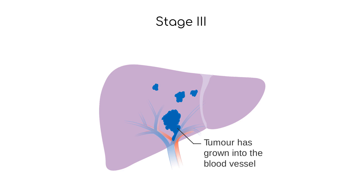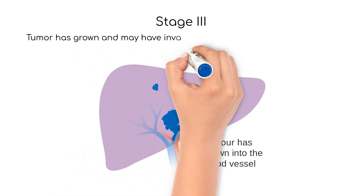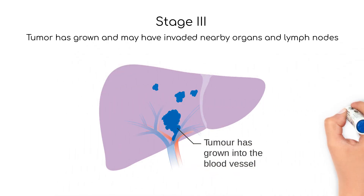Stage 3 is a more advanced stage of cancer when the tumor has grown even larger and may have invaded nearby organs or tissues. At this stage the cancer cells have also spread to nearby lymph nodes and may have started to spread to other parts of the body.